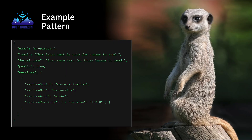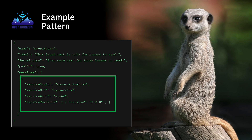Here's an example pattern. There's a name — you give it any name you like — and then a label and description that you can use for human reference; the computer ignores them. You can state whether it's public or not, which is useful in a multi-tenancy environment. Then there's an array of services, and each service is defined with a four-tuple: organization, service URL, hardware architecture, and a list of applicable versions.